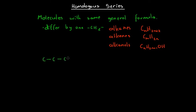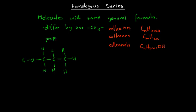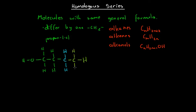If we start with a propanol molecule with all of its hydrogens, then the next member in the homologous series would be butanol. Butanol is just adding one CH2 group to propanol. So if we have propanol and want to go to the next member of the homologous series, all we do is add a CH2 group and we have the next member. Homologous series are really just groups of effectively the same molecule — the same functional group in the same spot — just getting longer and longer.